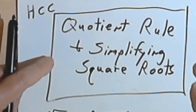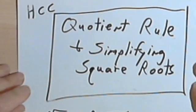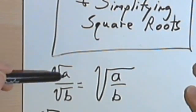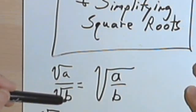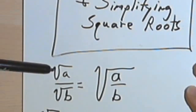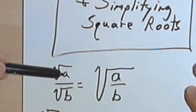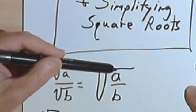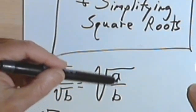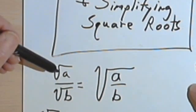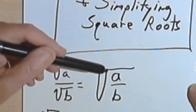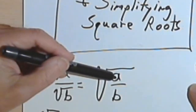This video is going to be about the quotient rule and simplifying square roots. What the quotient rule says is this: if we have two numbers, a and b, and we have a fraction that looks like the square root of a over the square root of b, we can take that fraction and make it into a single radical sign with a over b underneath. In other words, the square root of a divided by the square root of b is the same as the square root of a over b.